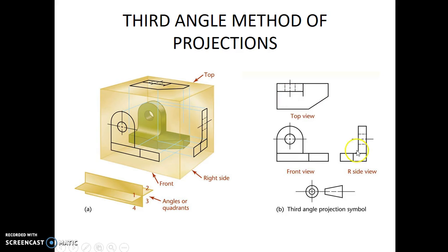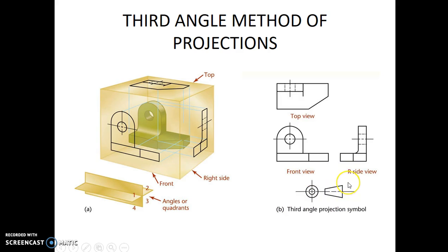Here we see the three views: the top view, the front view, and the right-hand side view. We have to note that the right-hand side view is seen on the right side of the front view, unlike in the first angle method of projection, and this is the symbol representing the third angle method of projection.